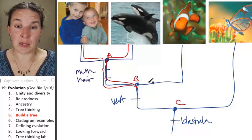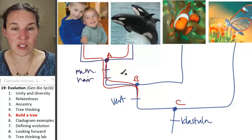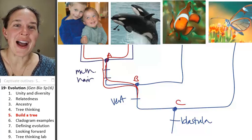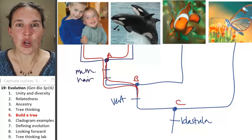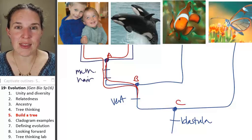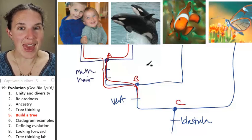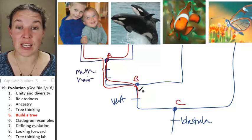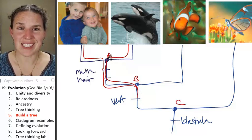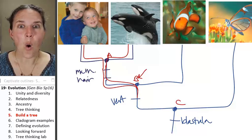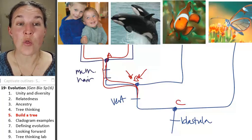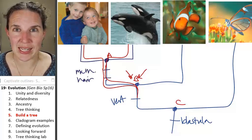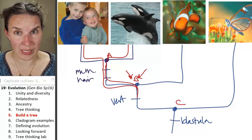So clownfish, awesome. The clownfish shares most recent common ancestor B with both these guys. You might, oh my gosh, I have to put this into a clicker question. Who is more closely related to the clownfish, the whale or the boy? And then look at most recent common ancestors, and you will see that boy and clownfish share ancestor B. Whale and clownfish share ancestor B. Do you know what that means? The whale is equally related to the clownfish as the boy is related to the clownfish.